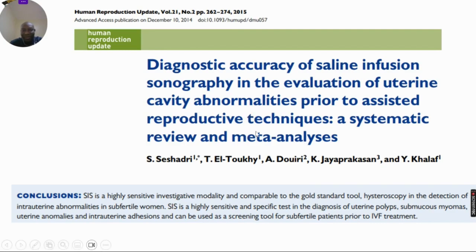The first systematic review on diagnostic accuracy of saline infusion sonography in evaluation of uterine cavity abnormalities prior to assisted reproduction concluded that SIS is a highly sensitive investigative modality comparable to the gold standard hysteroscopy in the detection of intrauterine abnormalities in subfertile women. SIS is highly sensitive and specific in diagnosing uterine polyps, submucous myomas, uterine anomalies, and intrauterine adhesions, and can be used as a screening tool for subfertile patients prior to IVF treatment.